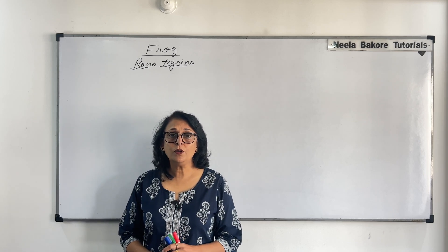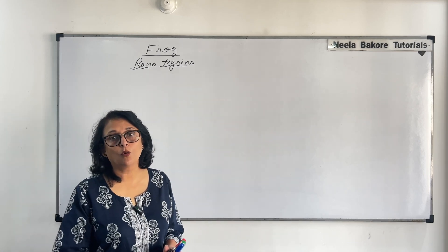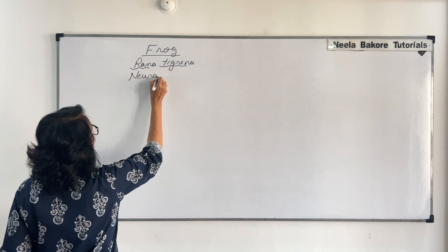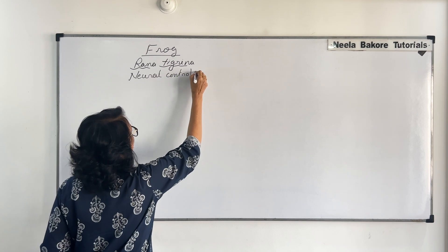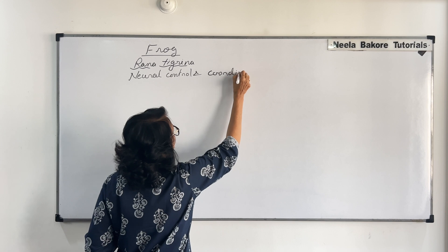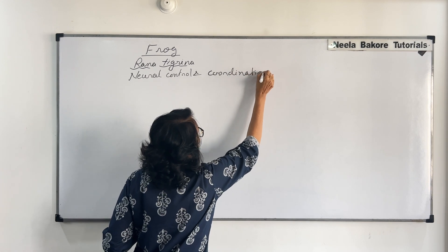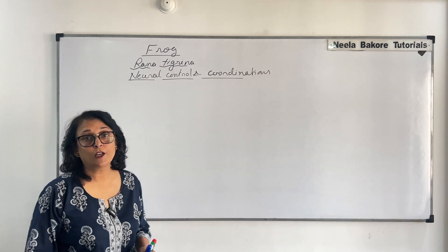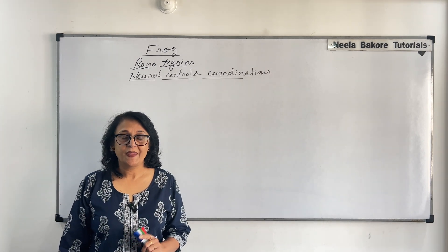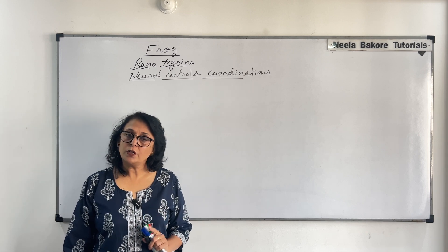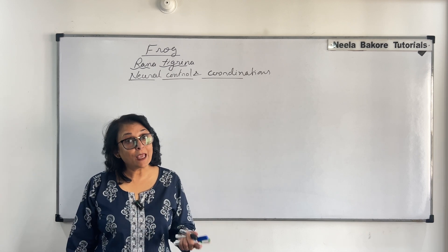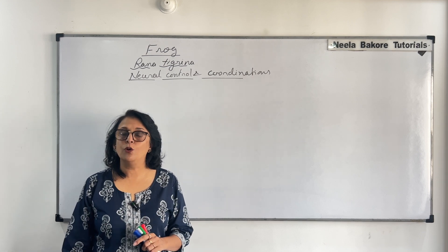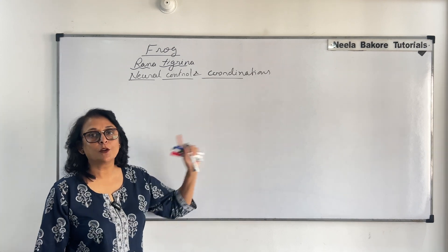Let us now talk about the neural control and coordination in frogs. Amphibians like frogs also have very well developed systems of control and coordination. And there are two, like ours: neural control as well as chemical control. That is one where the nervous system works and the other is the endocrine glands. Here we are talking about the nervous part.